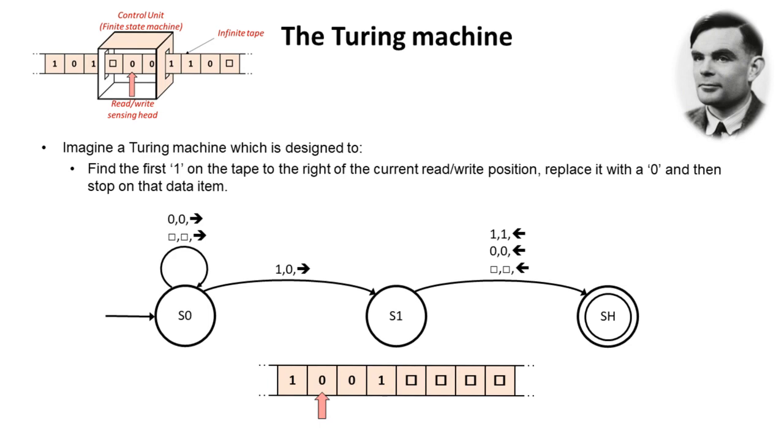So here is the finite state diagram that represents this Turing machine and on each transition we can see the inputs that received, the output and also which position the read write head will need to move to.